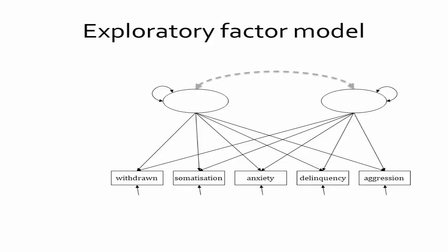Let me take you back to last week and show a picture of an exploratory factor model. A two-factor solution is estimated and each factor loads on all five items: withdrawn, somatization (the extent to which psychological problems manifest physiologically), anxiety, delinquency, and aggression. If we estimate this exploratory factor solution we'll probably see the first three items loading strongly on one factor and the final two on another. With oblique rotation these two factors are likely correlated, since problem behavior typically manifests in different ways — internalizing behaviors such as being withdrawn and anxious, and externalizing behaviors such as acting out.